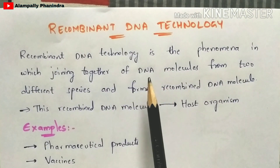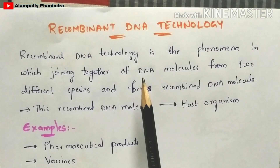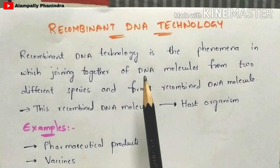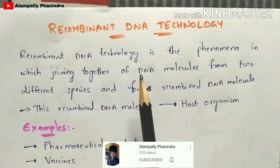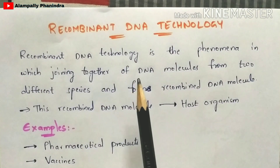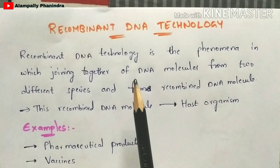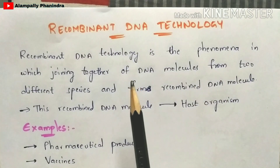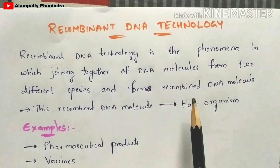To understand this, you are going to take two DNA molecules. One molecule will be extracted from one species and another DNA molecule will be extracted from another species. You extract both DNA molecules from two different species, combine them, and the hybrid that is formed is called a recombinant DNA molecule.